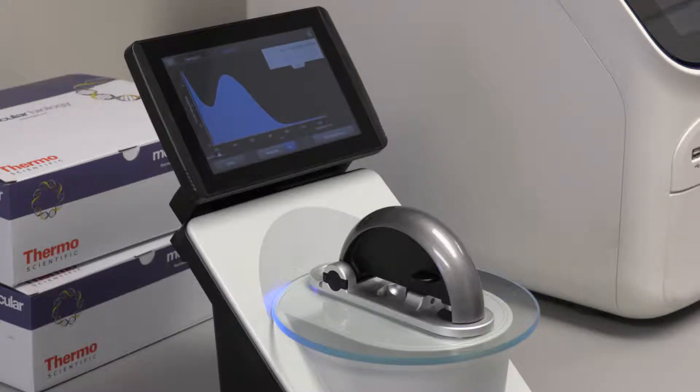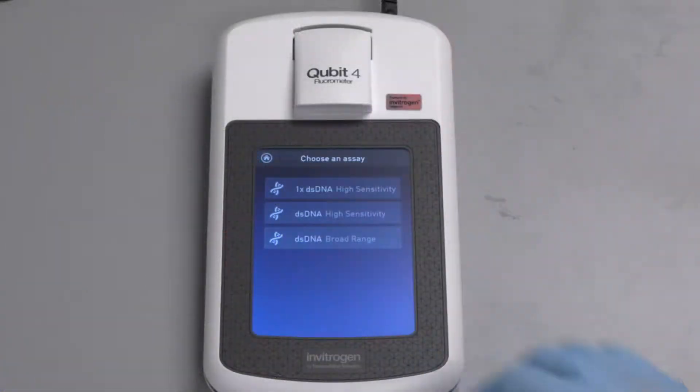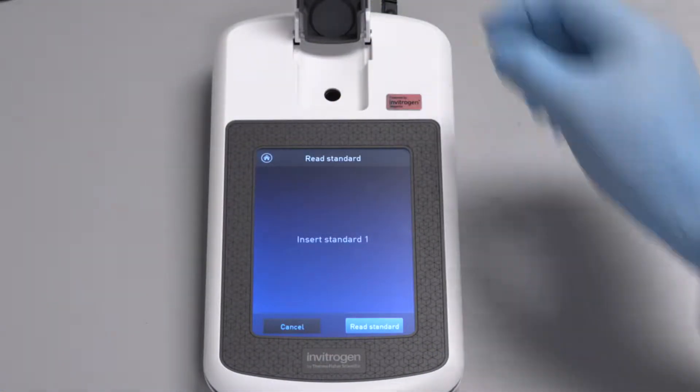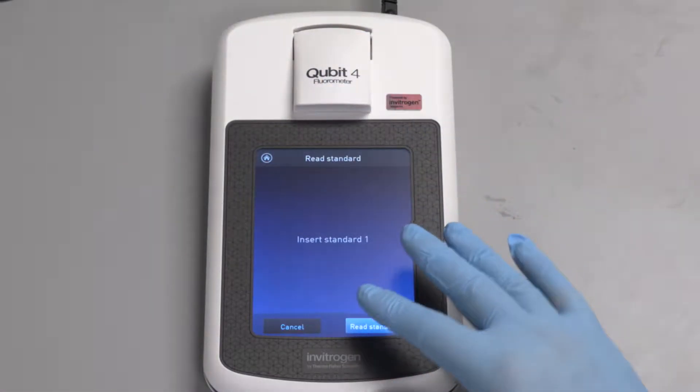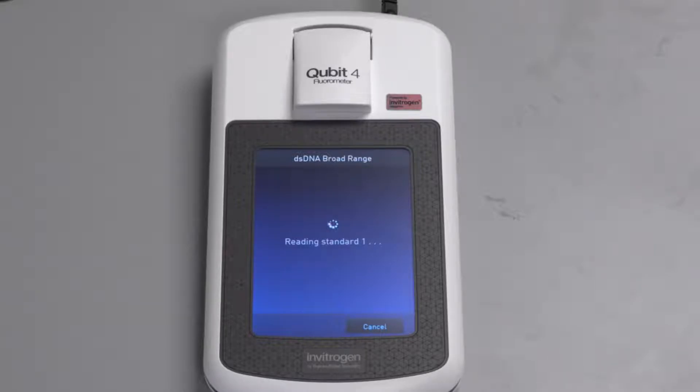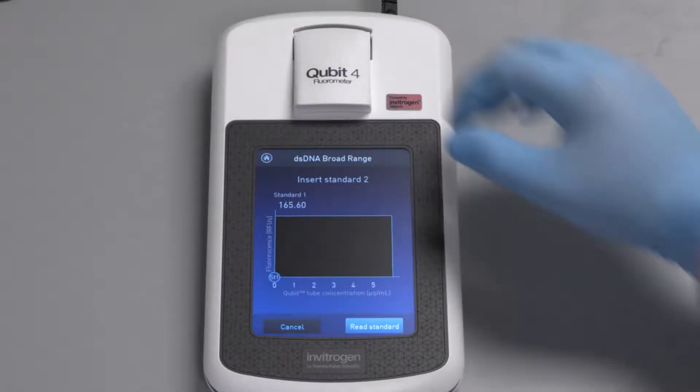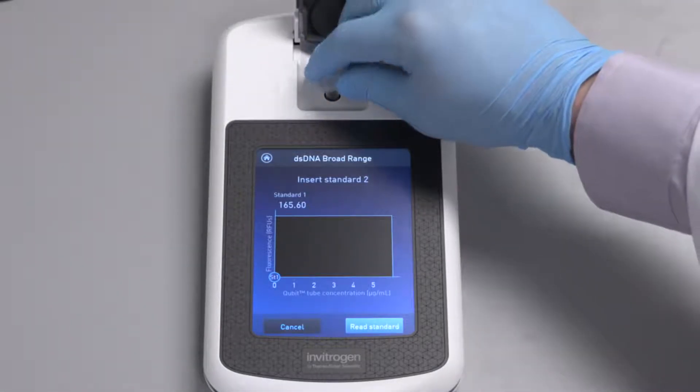The Qubit 4 fluorometer quantifies concentration by binding specific fluorescent dyes to the analyte of interest. The final unknown concentration is calculated based on a user-generated standard curve. Fluorescent measurements are very sensitive, allowing for accurate measurement of dilute samples.